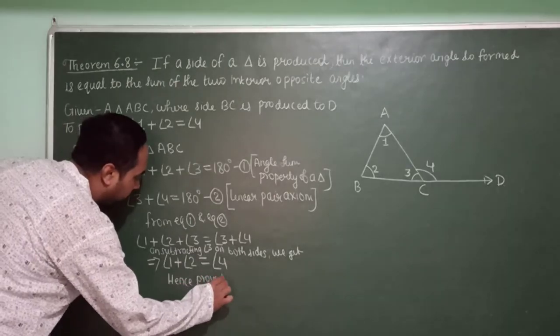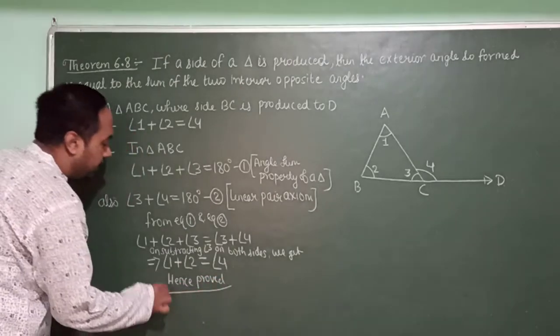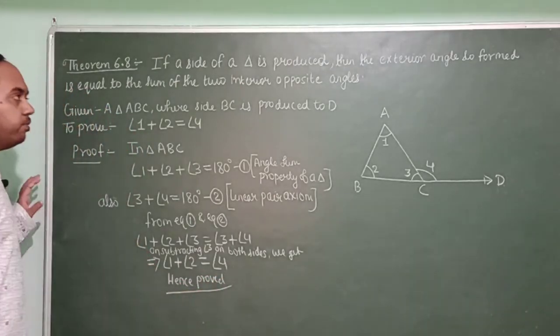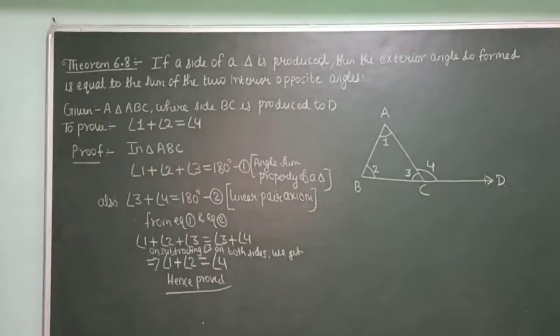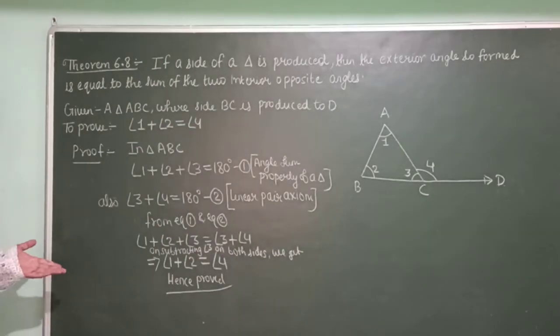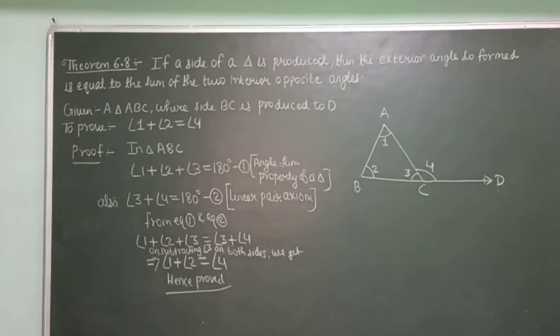So this is the proof of the exterior angle sum property of a triangle. Hope you have understood it. Please note it down. Thank you.